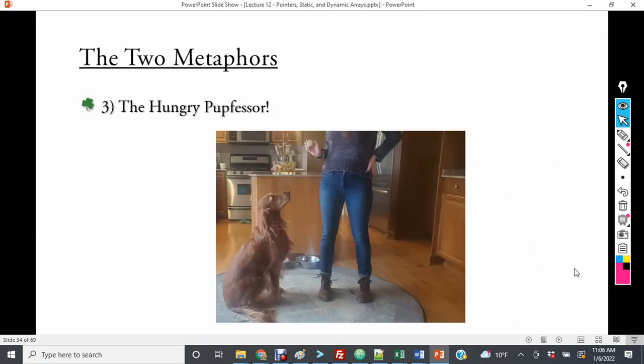The second metaphor is the hungry pup-fessor. So here we have Eirinn. And Eirinn is very fixated on this piece of cheese. And it turns out that a dog looking at a piece of cheese that she wants to eat is similar to a pointer, even though Eirinn is an Irish setter.